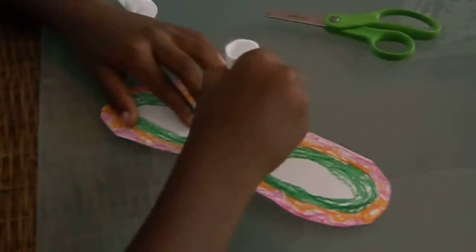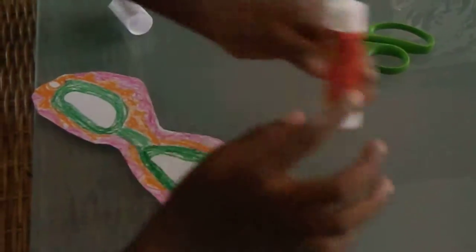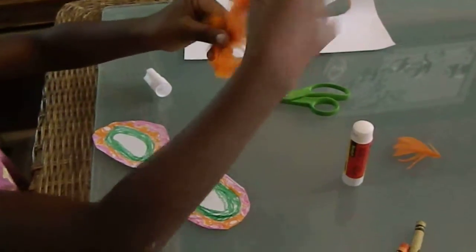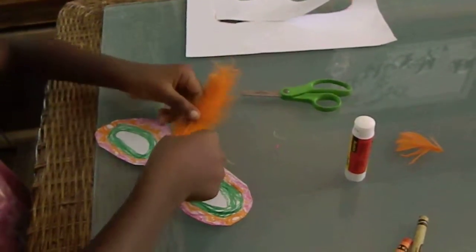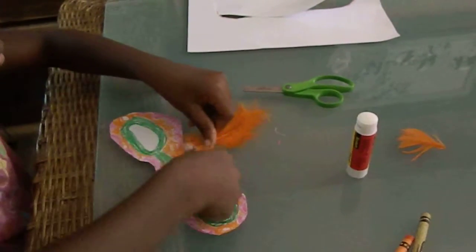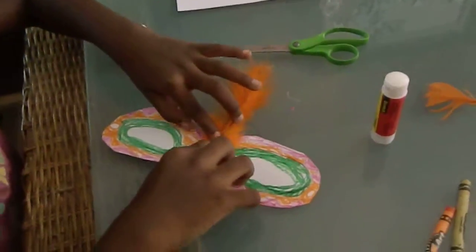Now if you have glue, get your glue. You grab this part and you have this leaf. Push it on.